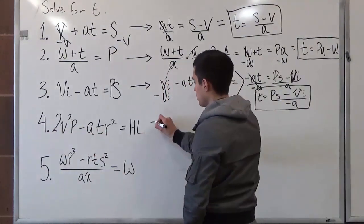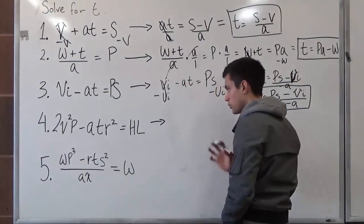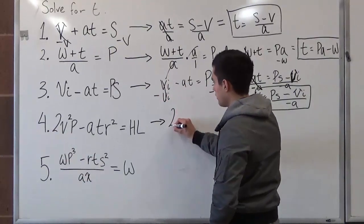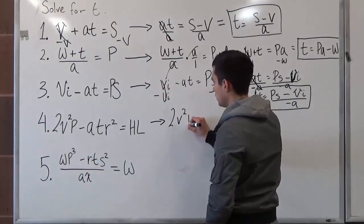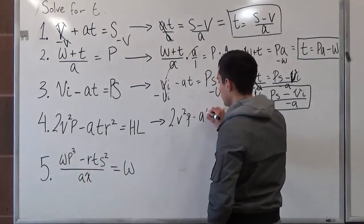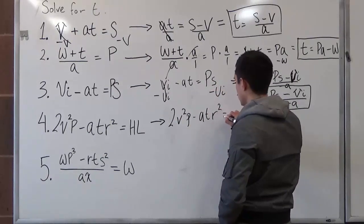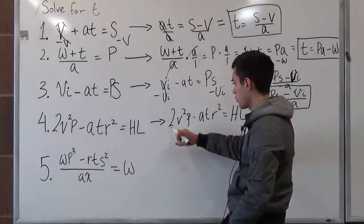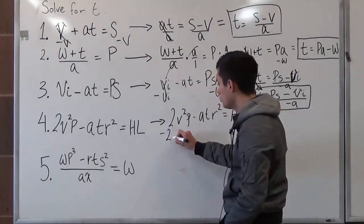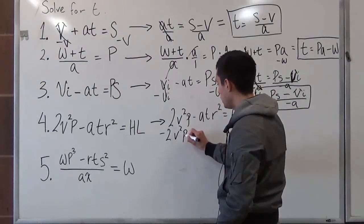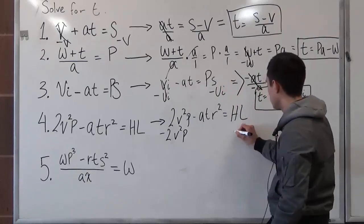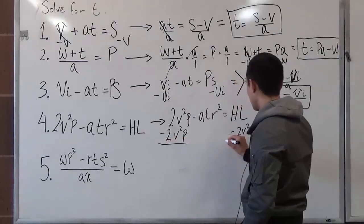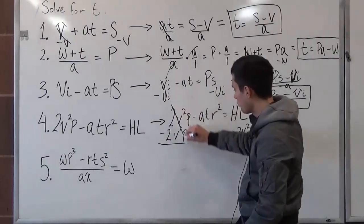So now, in order to do this, always remember this is what we're trying to move. So we have 2v squared p minus atr squared is equal to hl. So what we did before, we're going to subtract this as a whole. So minus 2v squared p minus 2v squared p. This whole thing cancels out.